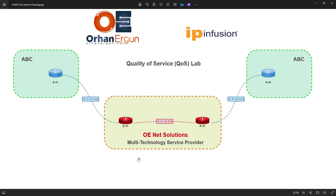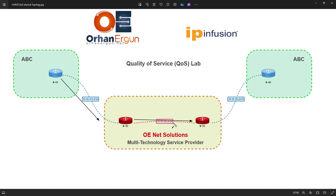Let's take a look at the topology. Router 1 is for a client and what I'm trying to do is to send some traffic from there to the other customer branch on the other side. Router 2 is a service provider and we are trying to send the customer traffic through our network, making sure it does not go beyond 500 kilobits per second. If it does, we are not going to drop it — we are just going to look for empty or not-completely-full time slots to place the extra buffered traffic.